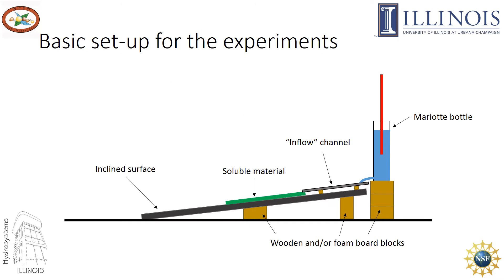The basic setup for the experiments will be the following. You will need the Marriott bottle and the soluble material slab, and you will need to set up the soluble material slab on an inclined plane. For this, you can use wood or foam board blocks. In certain cases you might need an inflow channel — it's not necessary, but if you need one, we used an aluminum c-section.